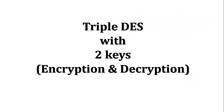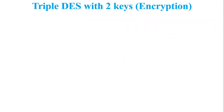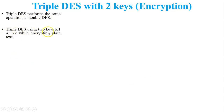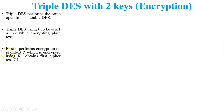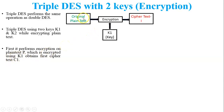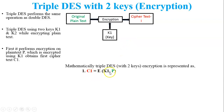Now we discuss Triple DES with two keys — encryption and decryption. Triple DES with two keys performs the same operation as Double DES but uses only two keys, K1 and K2, while encrypting the plain text. The sender encrypts the data before sending it to the receiver. First, it performs encryption on plain text P using K1 to generate the first ciphertext C1. Mathematically: C1 = E(K1, P).